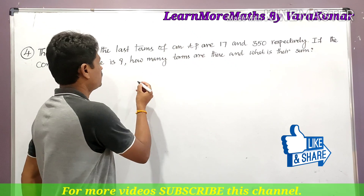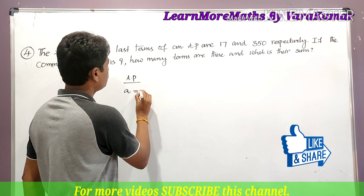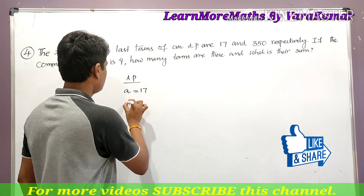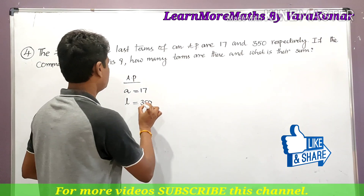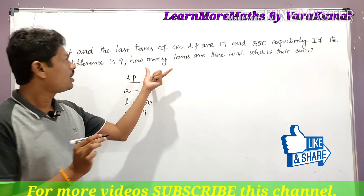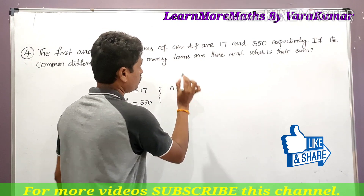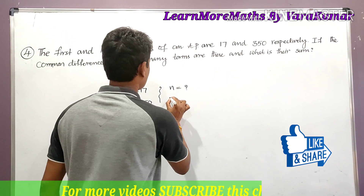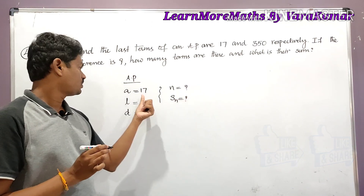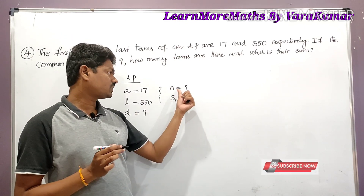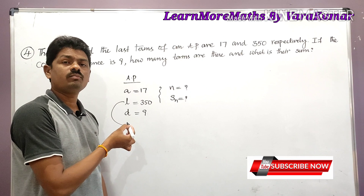We have to analyze what is given and what we need to find. The first term of the AP is denoted by small 'a', which is 17. The last term is denoted by 'l', which is 350. The common difference is denoted by small 'd', which is 9. We need to find the number of terms 'n' and the sum 'Sn'.